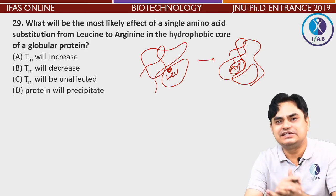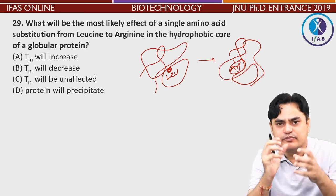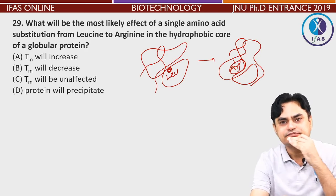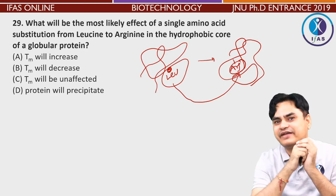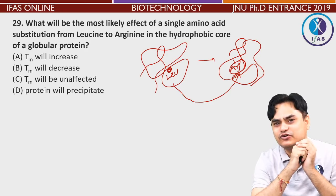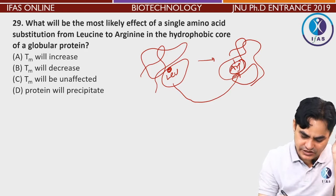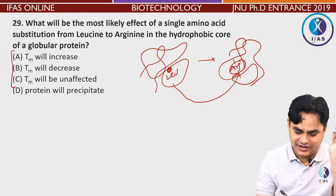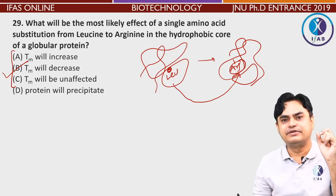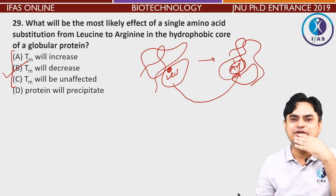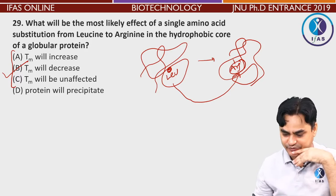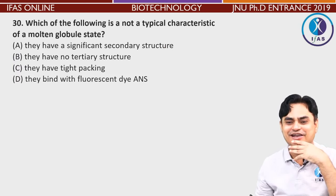Here the question states that in the hydrophobic core, if there is a hydrophobic amino acid, the interactions are strong and the protein's Tm is comparatively higher. But when you bring arginine into the hydrophobic core, the hydrophobic interactions that were previously strong will no longer be as strong. So the answer is: Tm must decrease, because you are incorporating a different amino acid instead of a hydrophobic amino acid into the hydrophobic core.